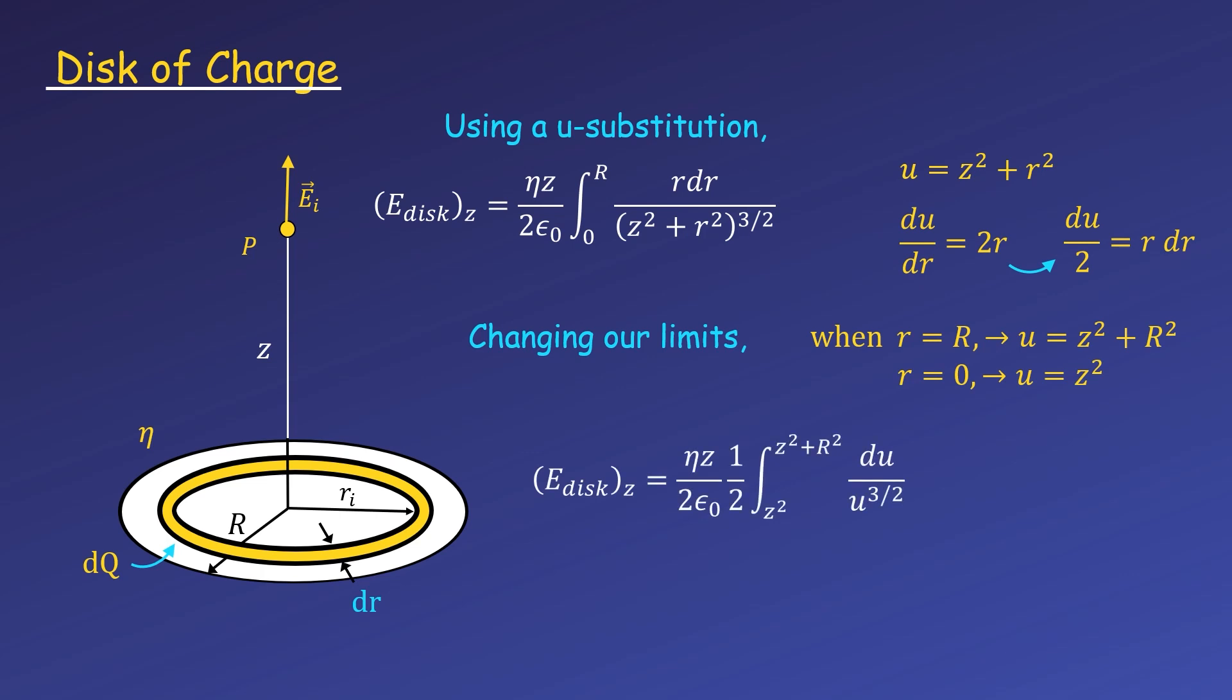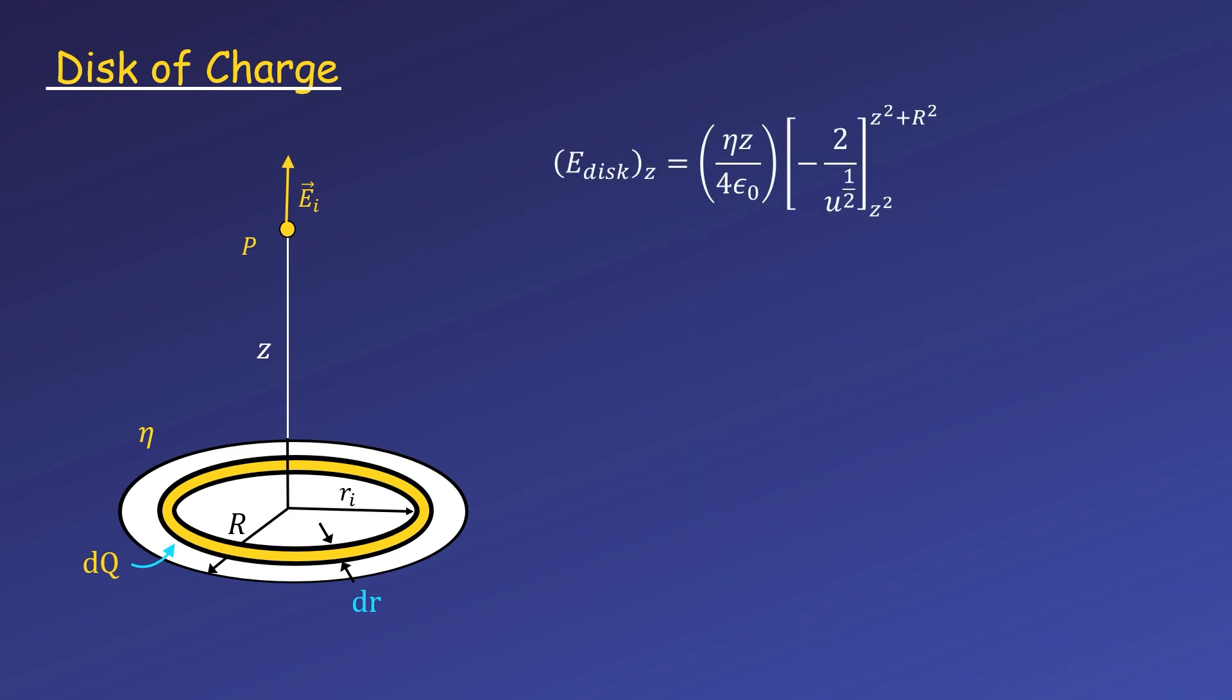Now our integral is just du over u to the 3/2, which is the same as u to the -3/2. Our exponent increases from -3/2 to -1/2, and we divide by -1/2. The 2 comes up, and we can move our u to the bottom and make the 1/2 exponent positive.